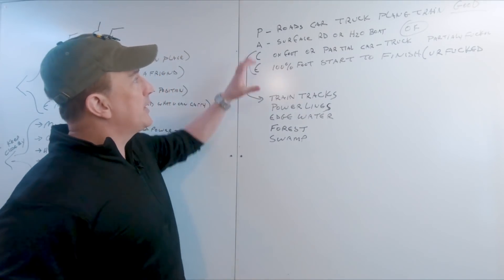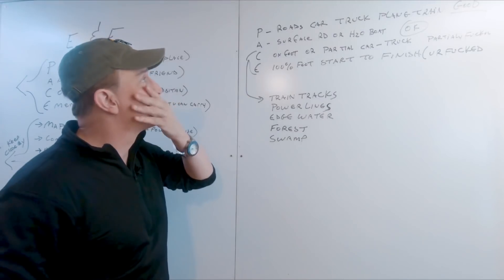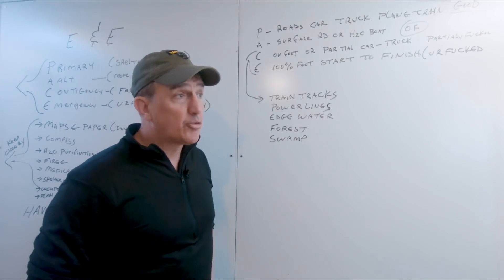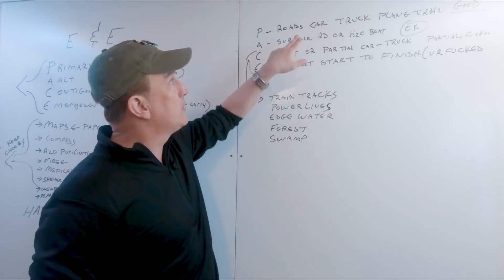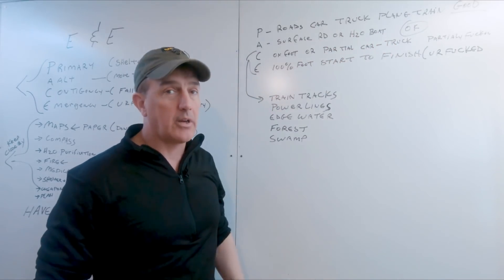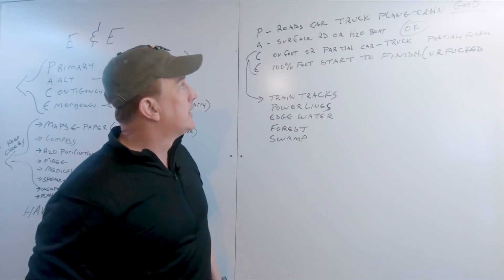Again, we have the PACE here: Primary, Alternate, Contingency, Emergency. Now, when it comes to getting out of the area, your primary plan, get while the getting is good. And you can use the roads, cars, trucks, planes, trains, boats, whatever. That's a good method. If you can find yourself out of the power curve, great.